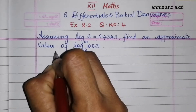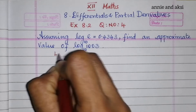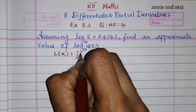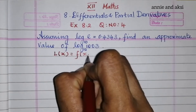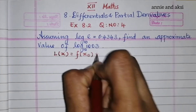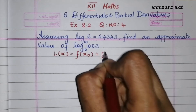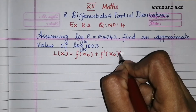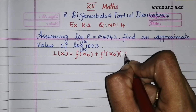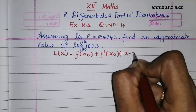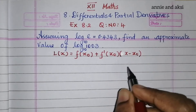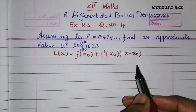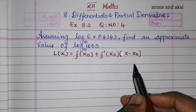The formula for linear approximation is: L(x) = f(x₀) + f'(x₀) · (x − x₀). This is the formula we will use.